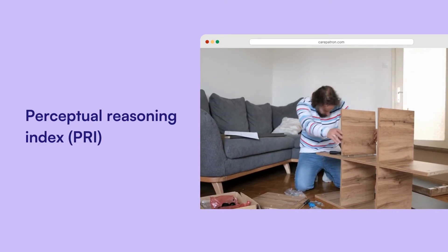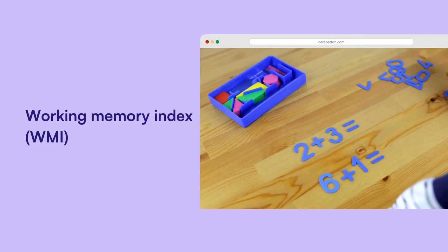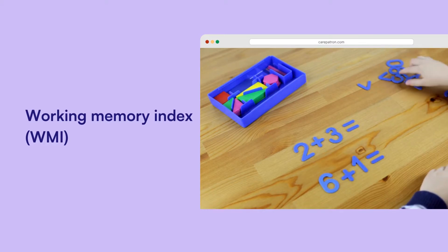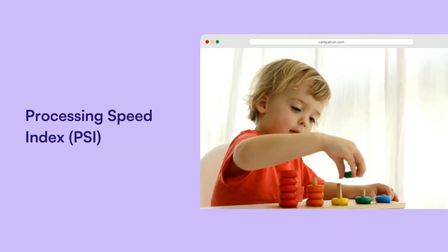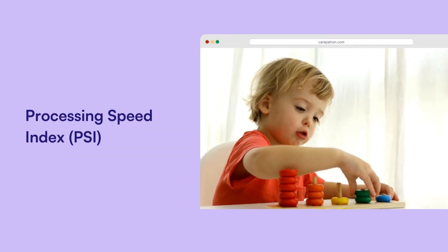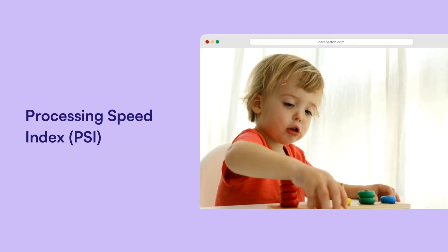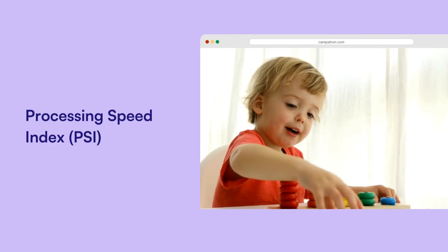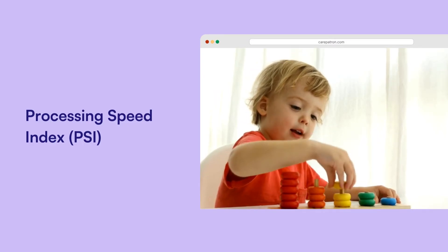The Working Memory Index assesses the ability to store and manipulate information in short-term memory using subtests like digit span and arithmetic. The Processing Speed Index measures the ability to quickly and accurately process visual information through subtests like coding and symbol search.